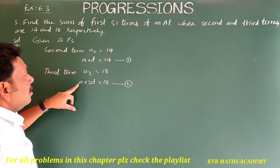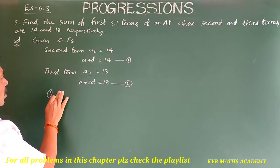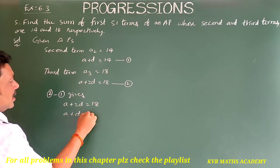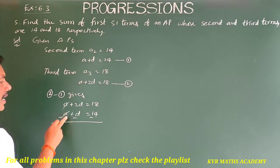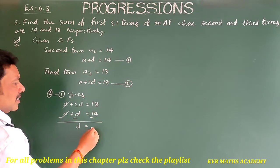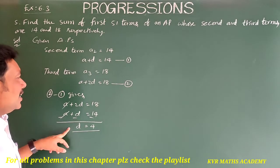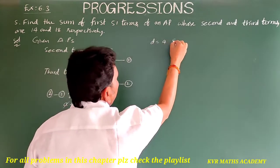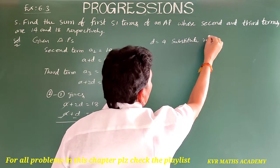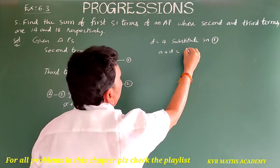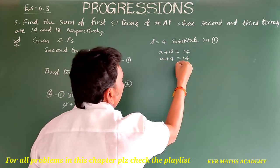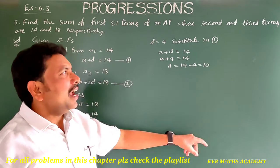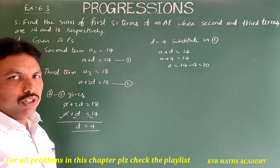Let us solve equations 1 and 2. Subtracting equation 1 from equation 2: (a + 2d) − (a + d) = 18 − 14, so d = 4. Now substitute d = 4 into equation 1: a + 4 = 14, so a = 14 − 4 = 10.